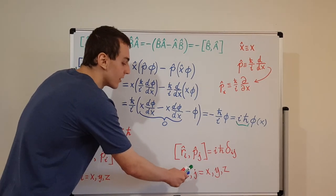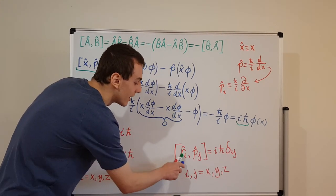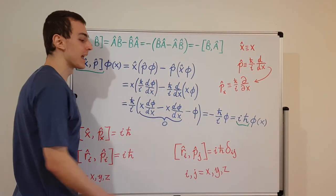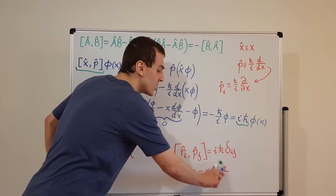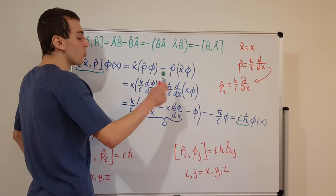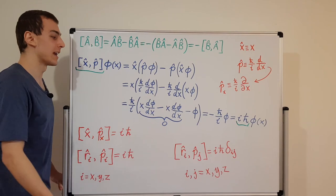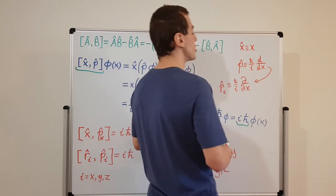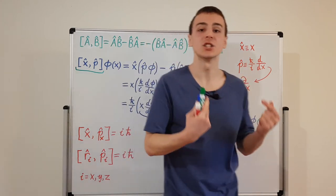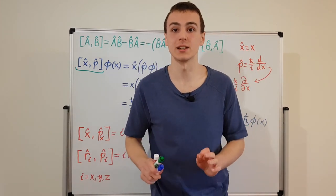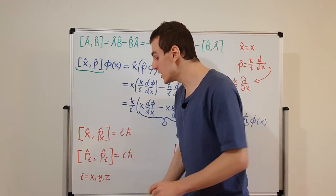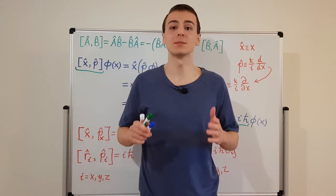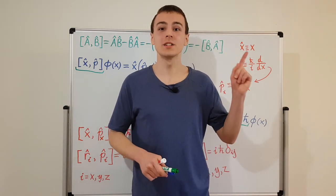Try working out other versions — for example, the commutator of y and p_z. You'll find that gives zero because the indices are different, and the fundamental reason is that a partial derivative with respect to one coordinate doesn't affect a different coordinate, so those operators can be freely swapped. We'll be using these canonical commutation relations in proofs and derivations in later videos in the quantum mechanics playlist.